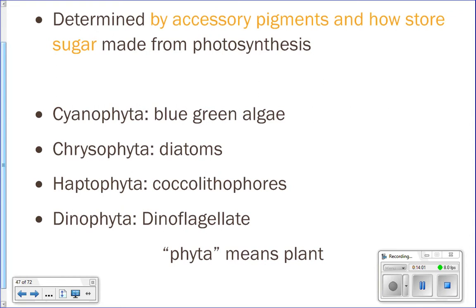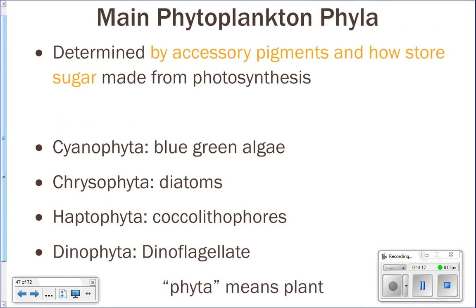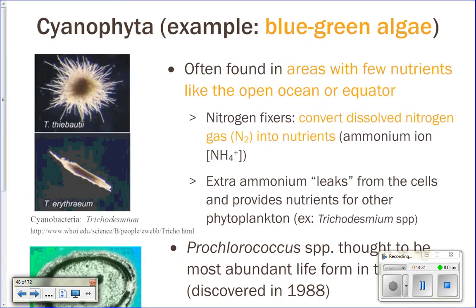You looked at three of these during your lab — cyanophyta, those are the blue-green algae; chrysophyta, those are the diatoms; and dinophyta, the dinoflagellates. We divide phytoplankton into their phyla based on two things: number one, their pigments — what pigments they have — and number two, how they store their sugars. Based on those two things, we divide them into phyla. The first phylum are the blue-green algae, the cyanophytes.